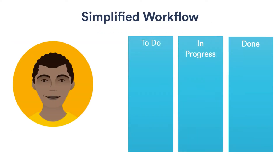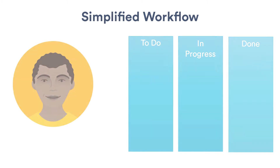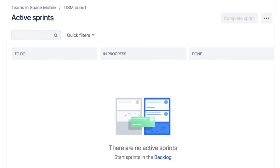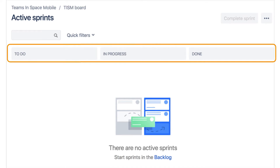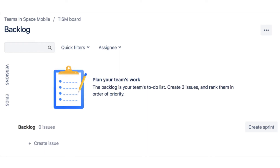Many development teams begin by using a simplified workflow. In Jira software, the simplified workflow created by default is part of creating a new project and scrum board. Teams can customize this workflow to better fit their requirements — we'll learn how a bit later. When we created a project and a scrum board in the last tutorial there was a simplified workflow associated with the board we created. These three statuses — to do, in progress, and done — were the columns on the board and represent the three basic steps or statuses in the workflow.